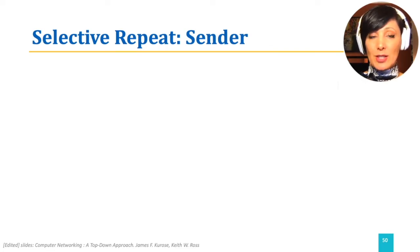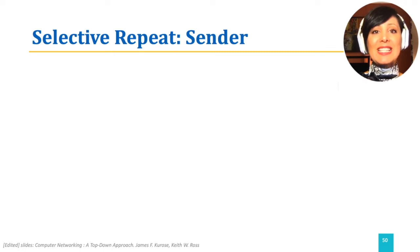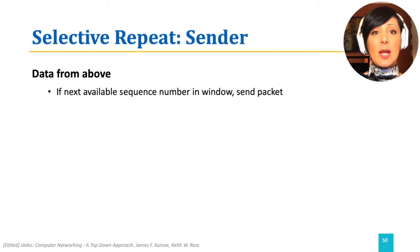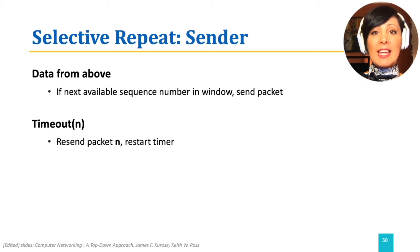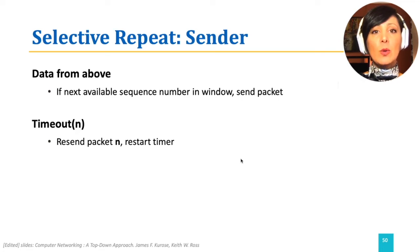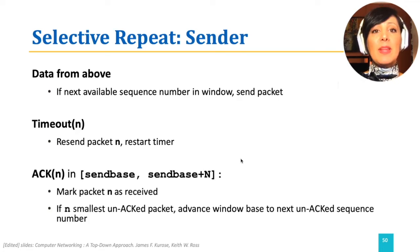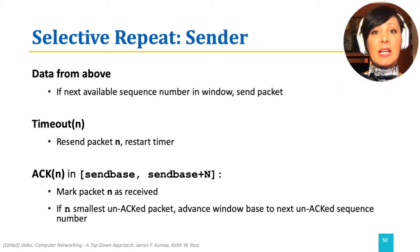The Selective Repeat sender receives data from above. If the next available sequence number is within the window, it sends it and starts the timer for that packet. When a timeout happens for packet n, only packet n is retransmitted and the timer for that packet only is reset. The window is moved forward when packet n received fills a gap at the beginning of the window close to the send base.